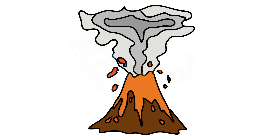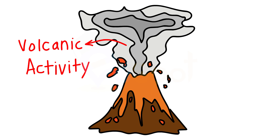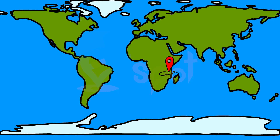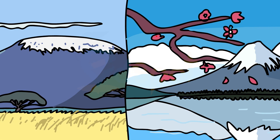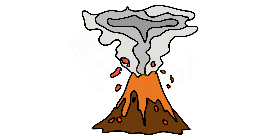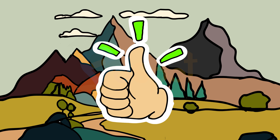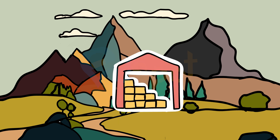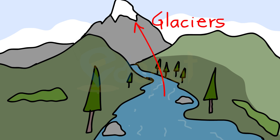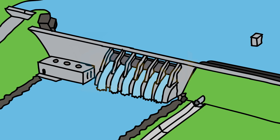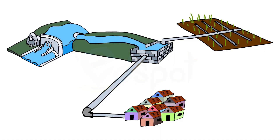Volcanic mountains are formed due to volcanic activity. Mount Kilimanjaro in Africa and Mount Fujiyama in Japan are examples of such mountains. Mountains are very useful — they are a storehouse of water. Many rivers have their source in the glaciers in the mountains. Reservoirs are made and the water is harnessed for the use of people.